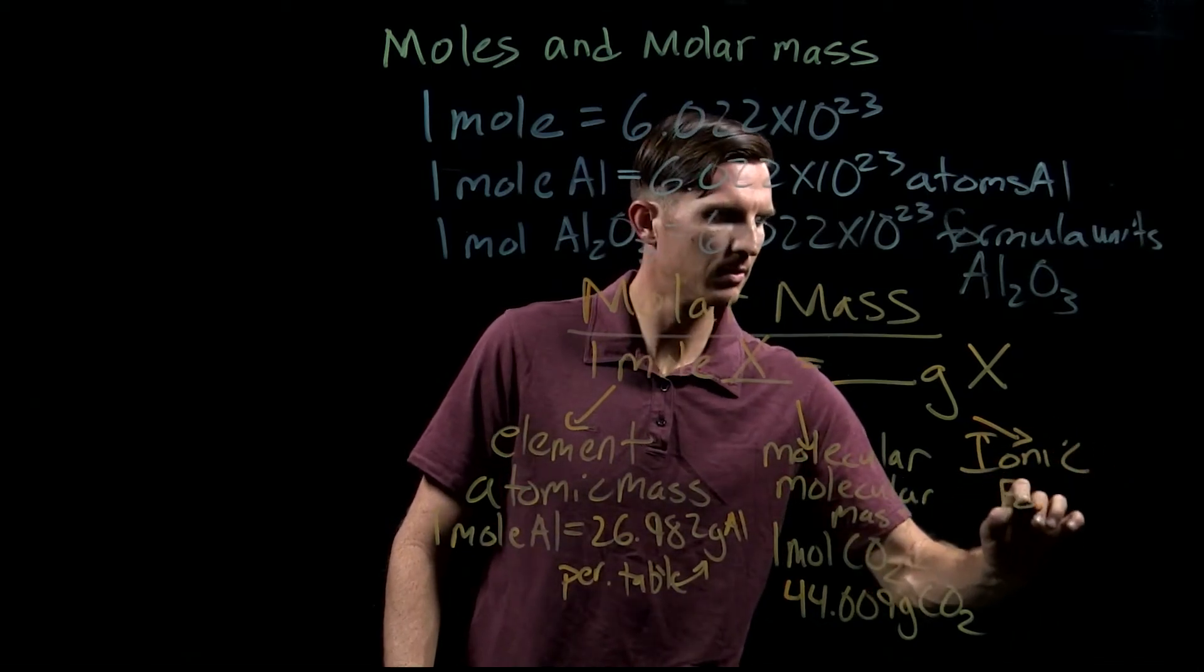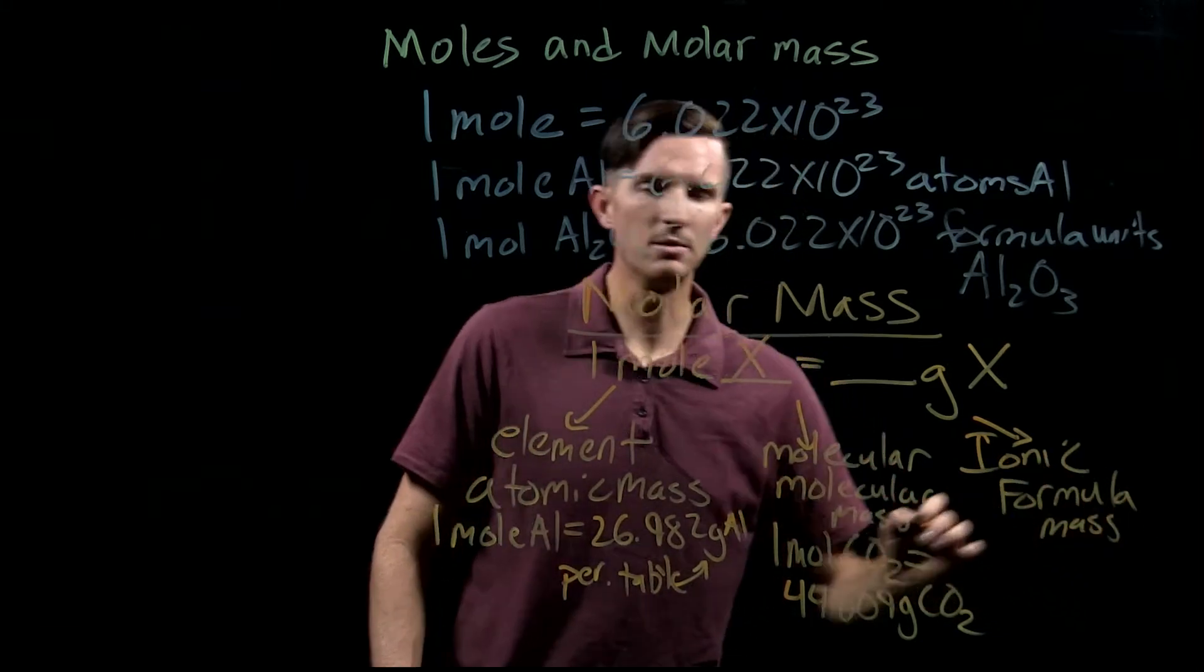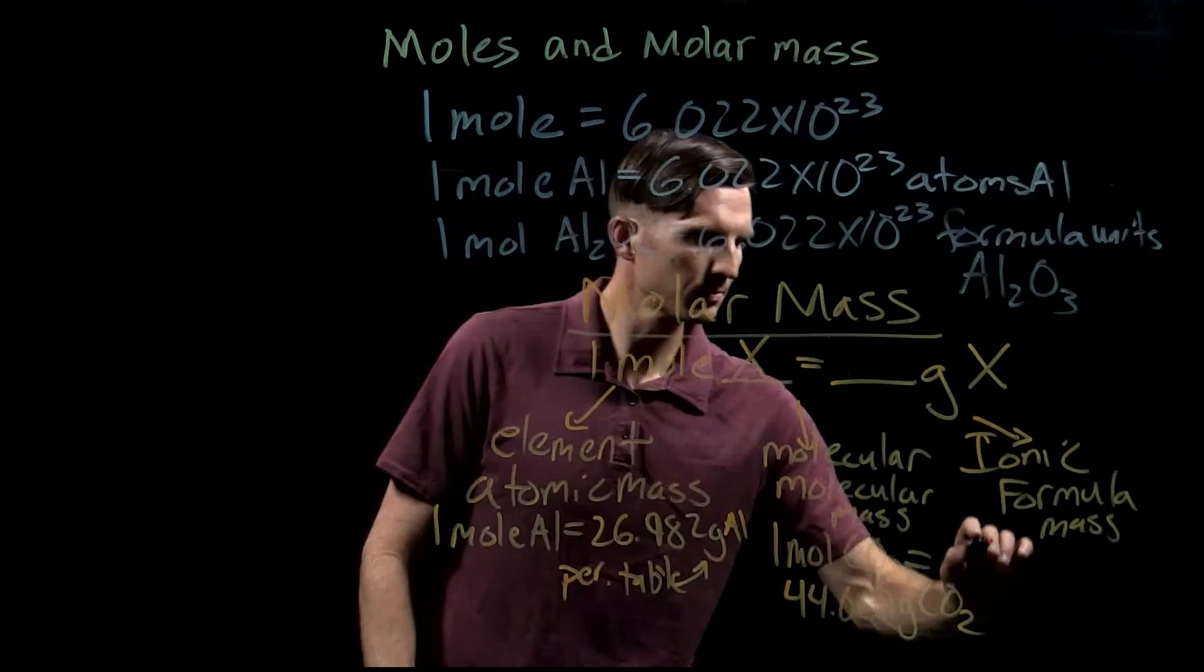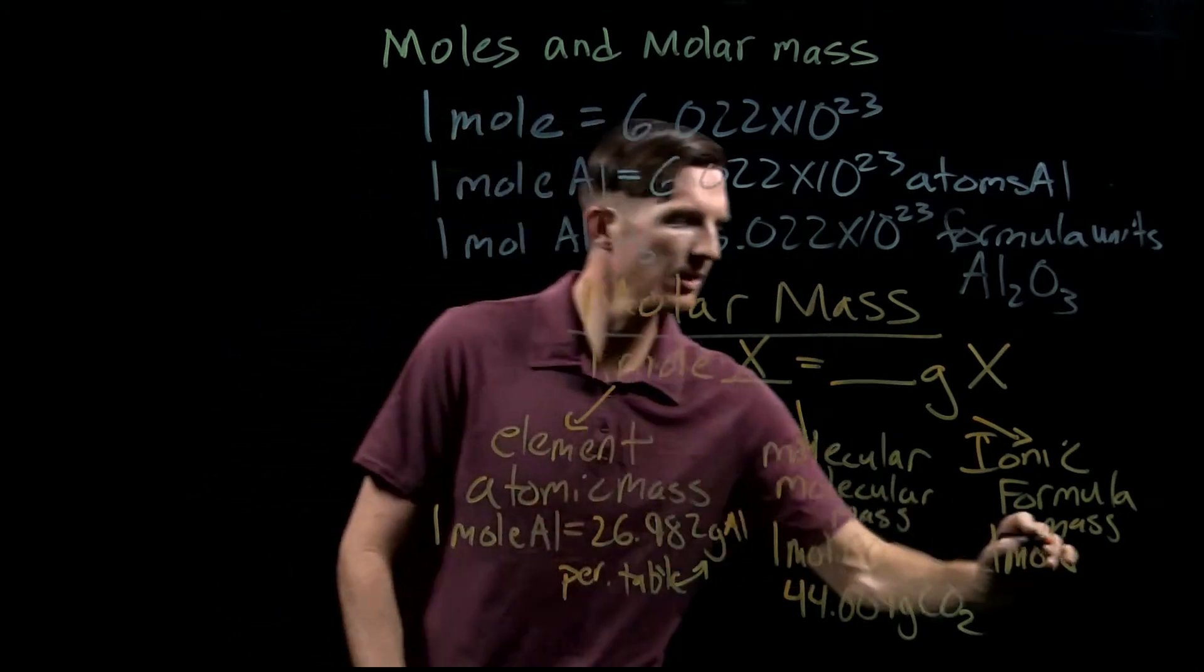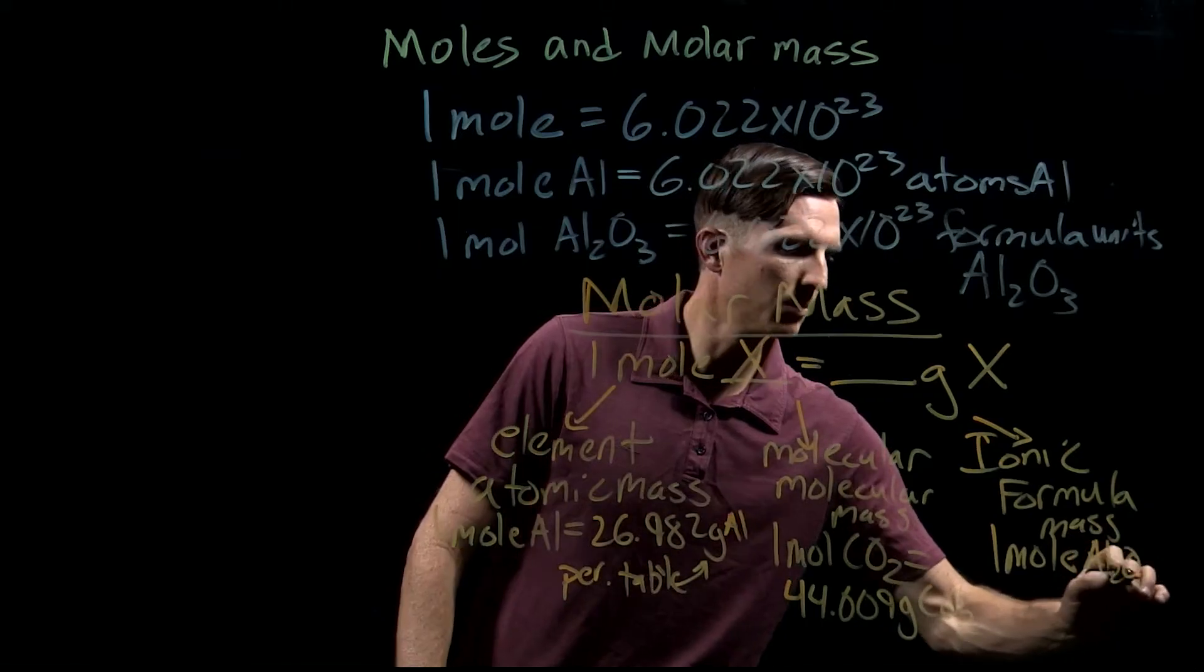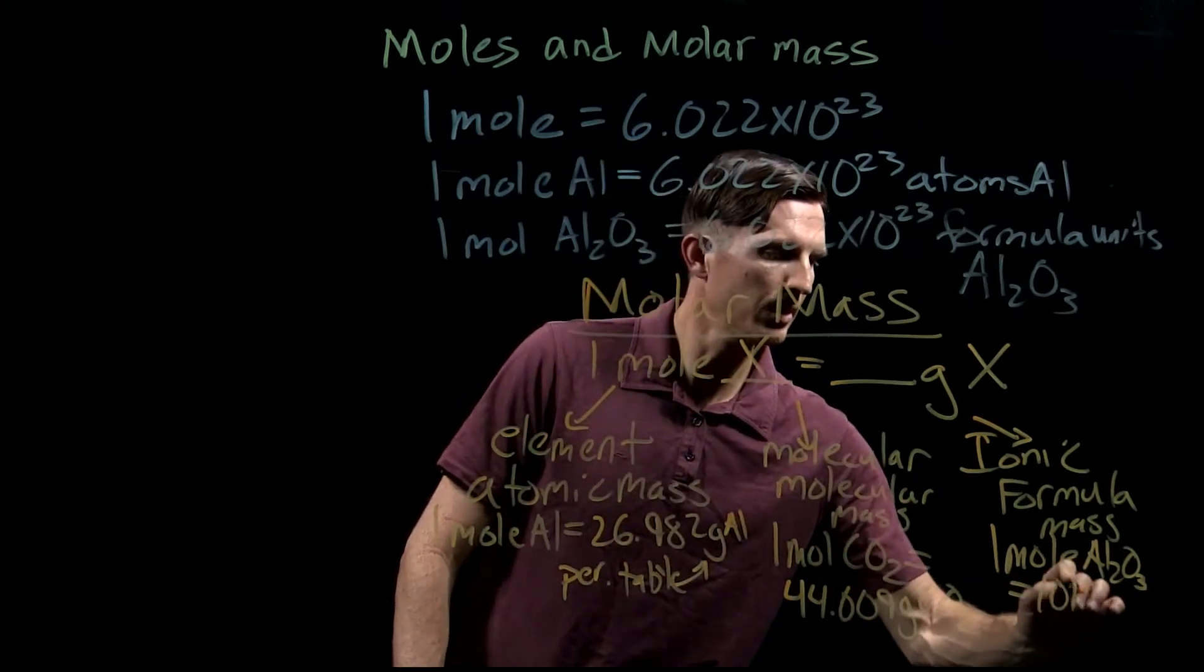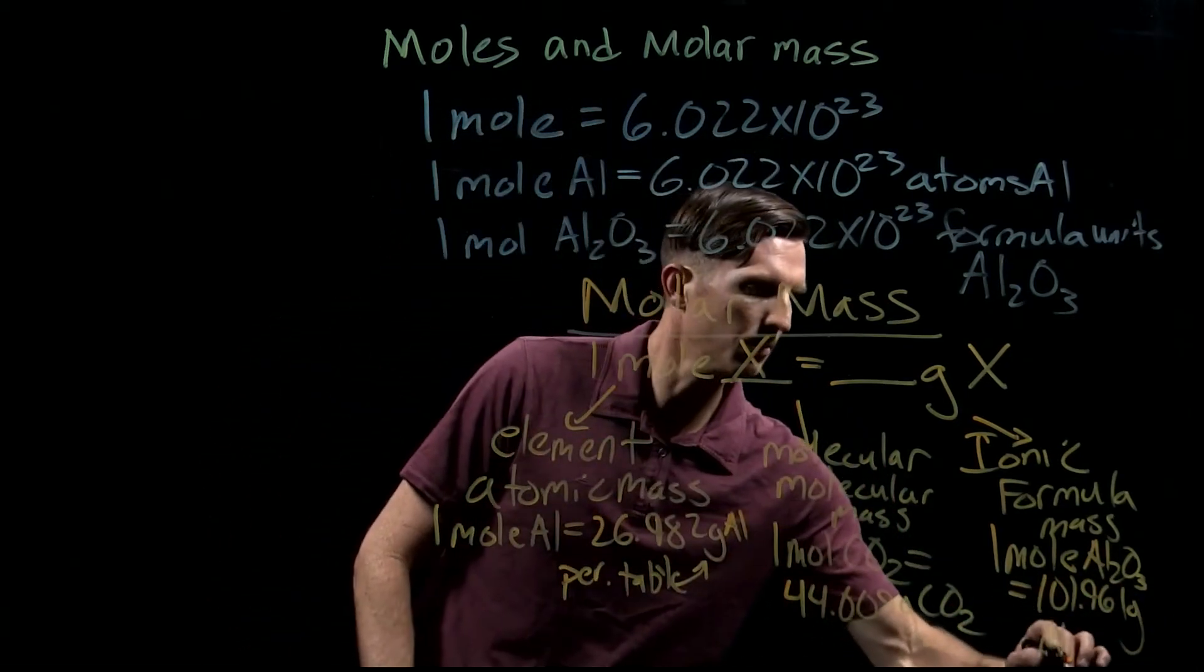This is the mass for one mole of that substance. If we look at our ionic compound here, aluminum oxide, one mole of aluminum oxide would be equivalent to 101.961 grams of our aluminum oxide.